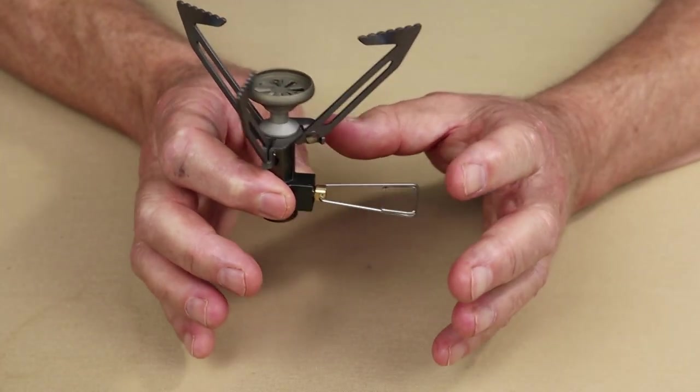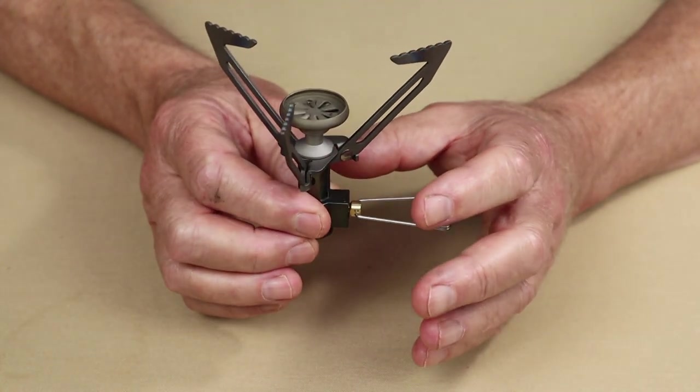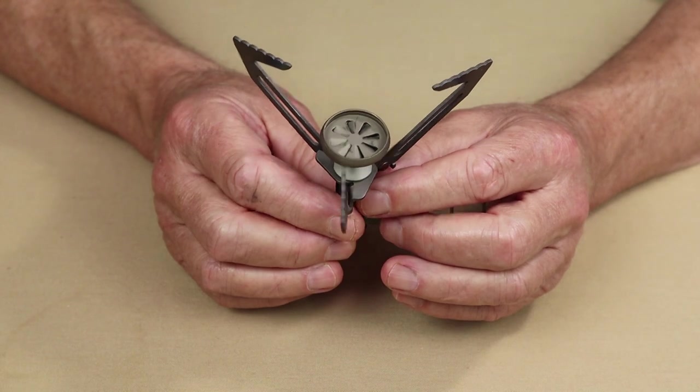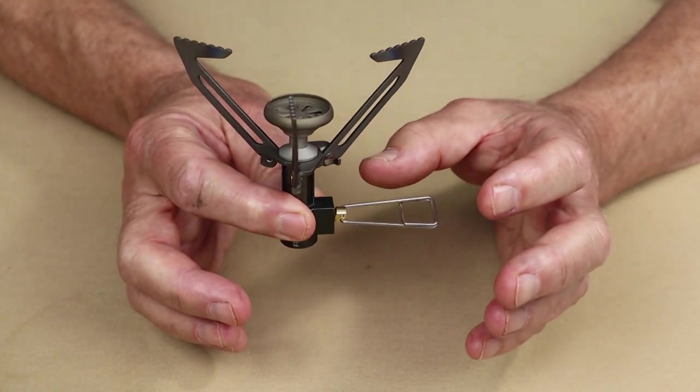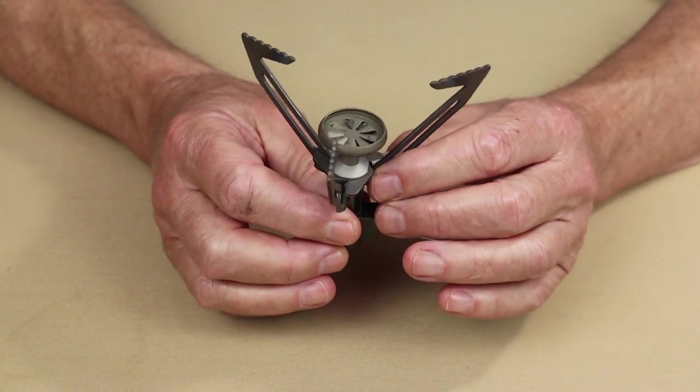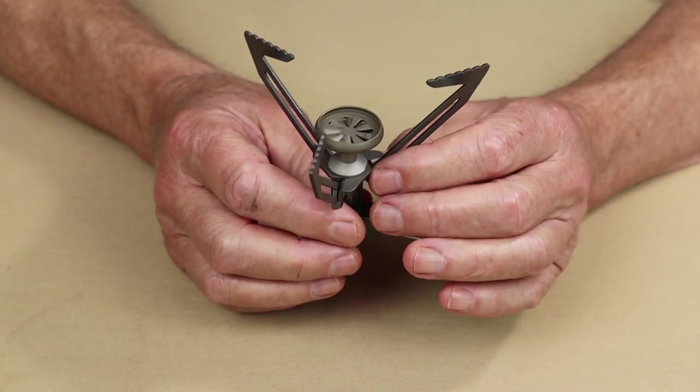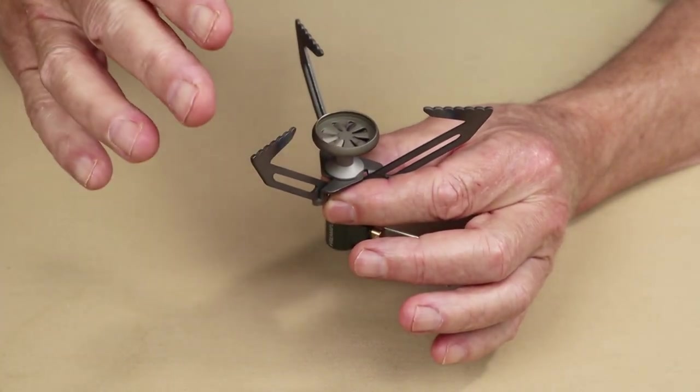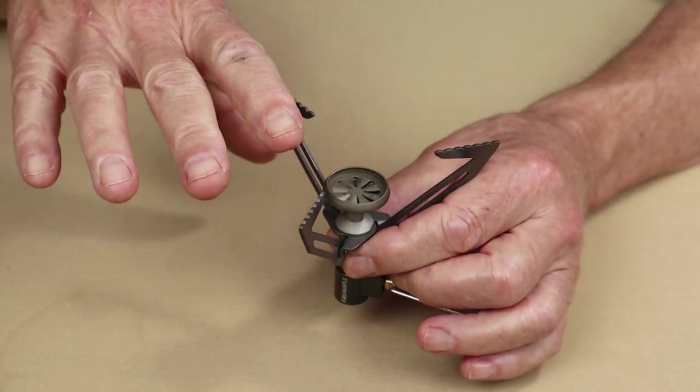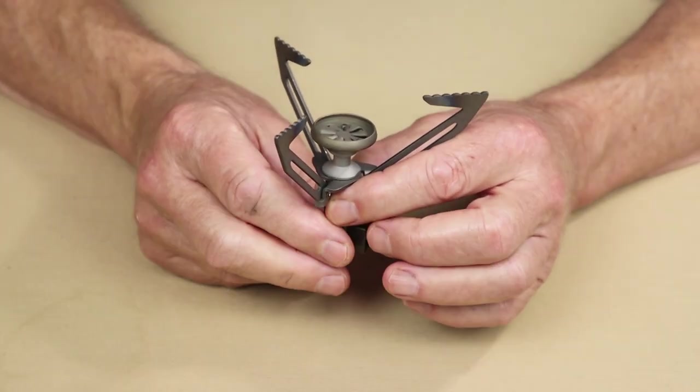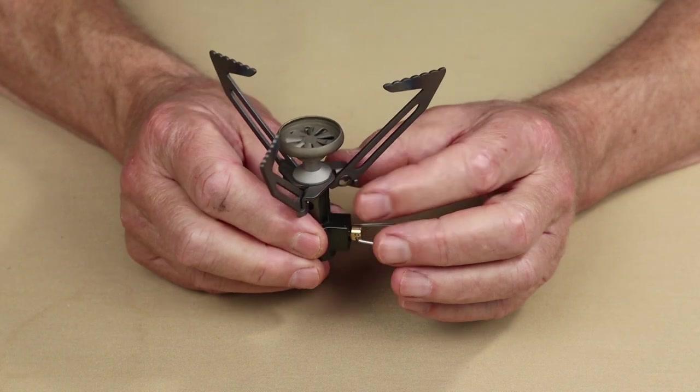Let me give you a few specifications on it. The stove itself, without the case, comes in at 48 grams or 1.7 ounces. Look at the size of that for a 1.7 ounce stove. That's pretty light. It gives you an idea just how much titanium is involved here.